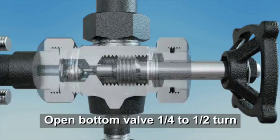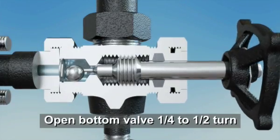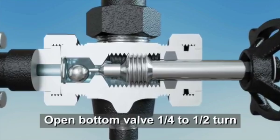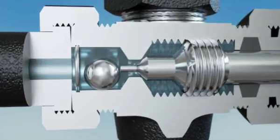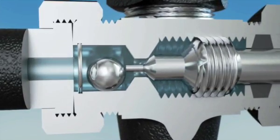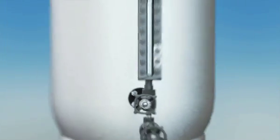Next, open the bottom valve one quarter to one half turn to allow liquid to flow into the gauge. Notice how only slightly opening the valve keeps the stem tip in contact with the ball check. The importance of this will be explained shortly.